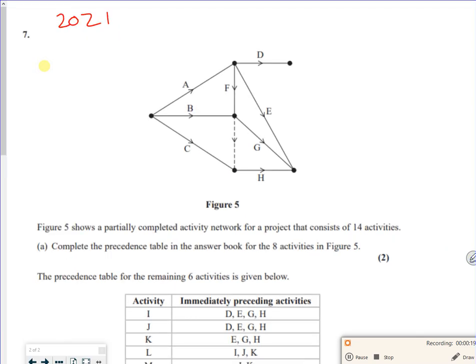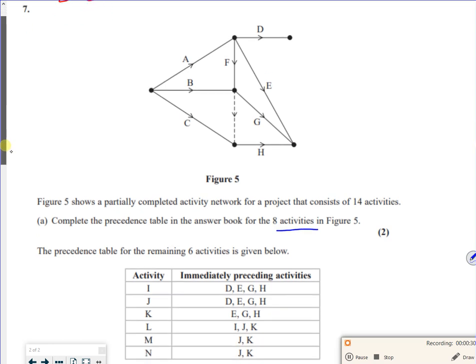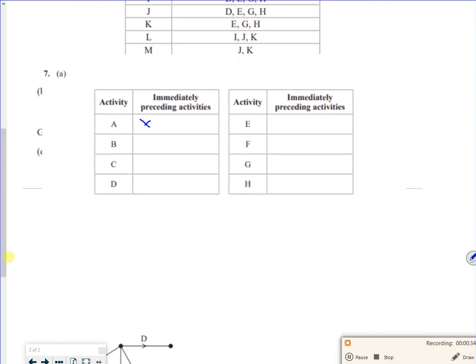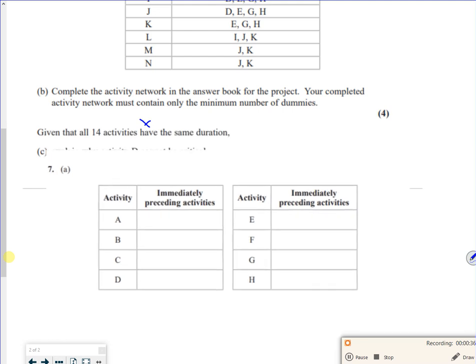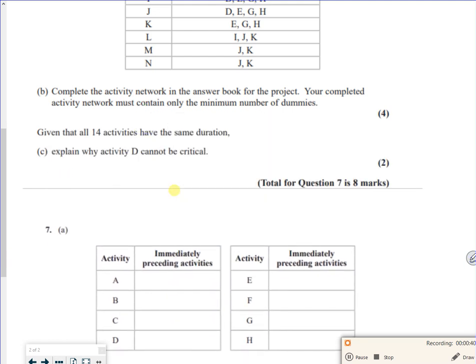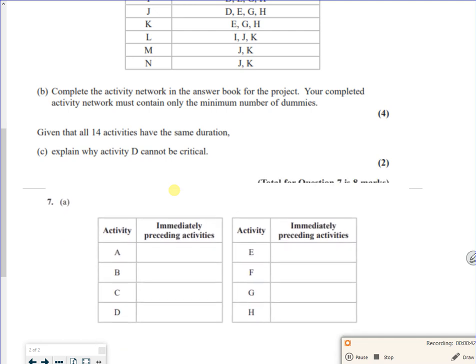So part A says, figure 5 shows a partially completed activity network, complete the precedence table for the 8 activities shown. I'll do a bit of zooming up and down. If I write here, I'll have to do a little bit of up and down to make it stay in the right place.